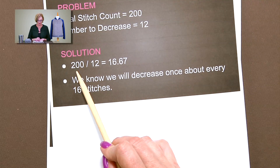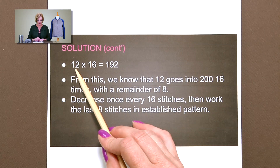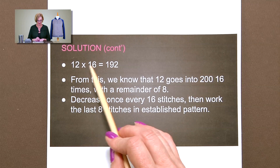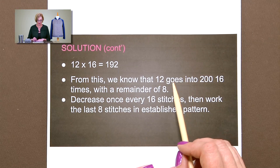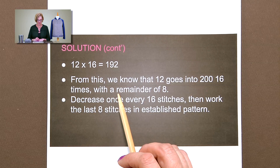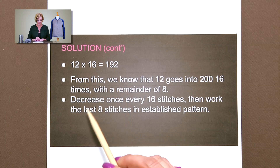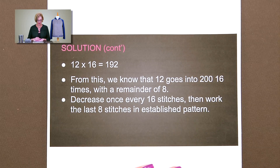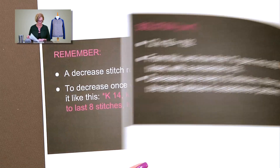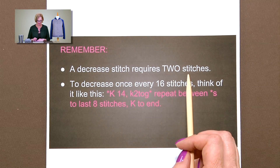200 divided by 12 is 16.67, so we're going to work backwards to write out the exact row. 12 times 16 equals 192. Remember our complete stitch count is 200. From this we know that 12 goes into 200 16 times with a remainder of 8, because 200 minus 192 is 8. So we'll decrease every 16 stitches, then work the last 8 stitches in established pattern, which is probably just stockinette.